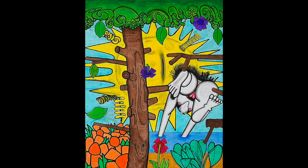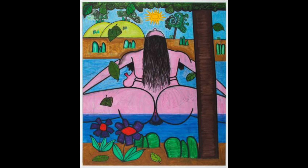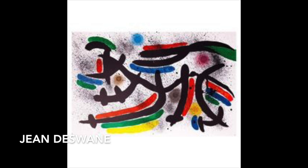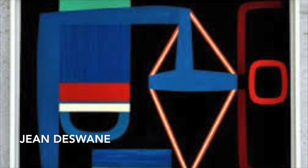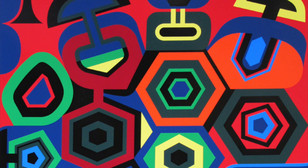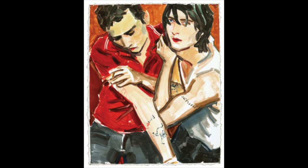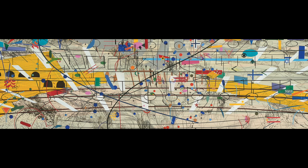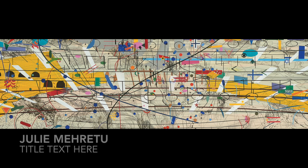Carol Dunham, who's Lena Dunham's father, uses line to make his paintings almost cartoonish. Or you can use line to be very graphic, like Jean de Swann — I think that's how you say his name. You can use line like Elizabeth Payton to just create more form — you actually make form using line.